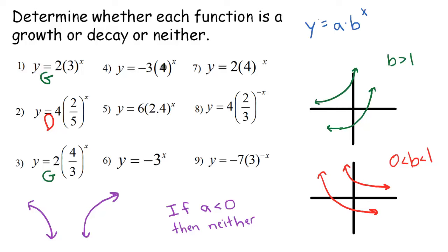Number 4, our b term is 4, so that would be a growth because it's greater than 1, but the value of a up in front here is negative 3, which is less than 0, so this is actually going to be neither.